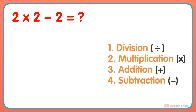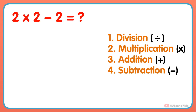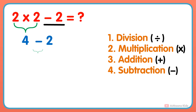What is 2 multiplied by 2 minus 2? In this problem, two operations — multiplication and subtraction — are given. So according to the order, we would first perform the multiplication: 2 multiplied by 2 gets 4. And next, subtract 2 from the result, and you will get your answer: 4 minus 2 equals 2.